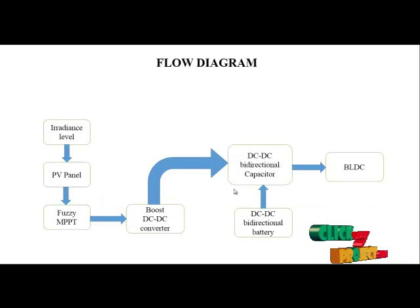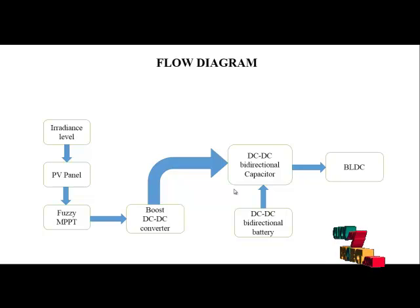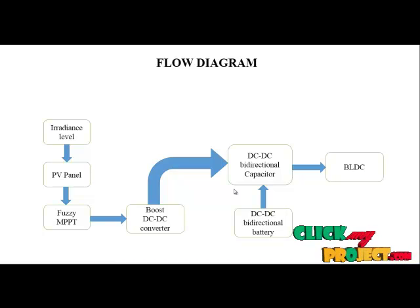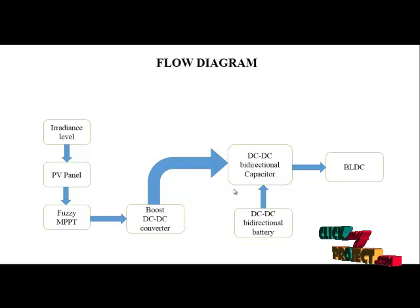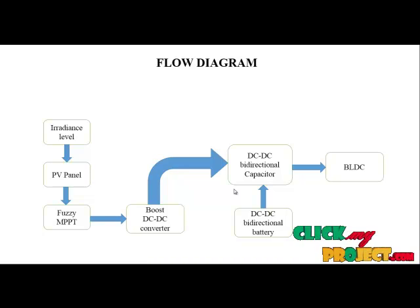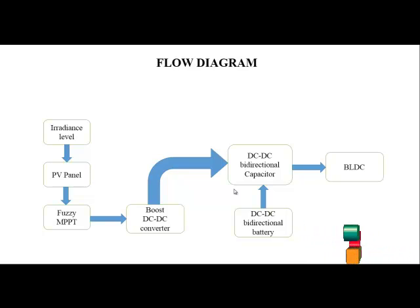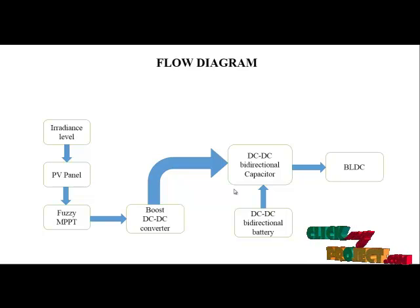The PV panel has two inputs based on the solar PV panel. One is the irradiation level and the other is the temperature level. The irradiation level is maximum at 1000 and the temperature level is maximum at 23 degrees.